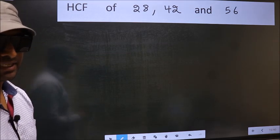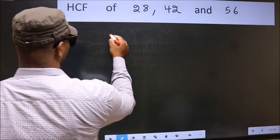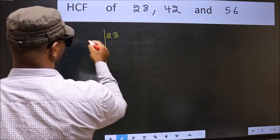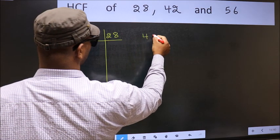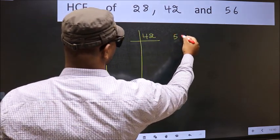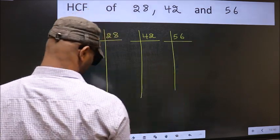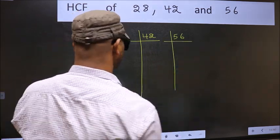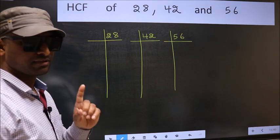What I mean is 28, 42, 56. This is your step 1.